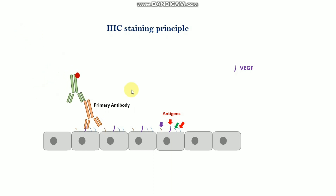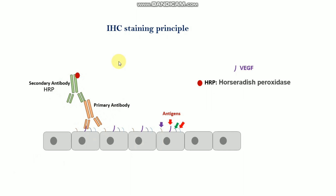The secondary antibody needs to be selected based on the primary antibody. If the primary antibody is mouse, you use anti-mouse secondary antibody; if it is rabbit, you use anti-rabbit. The secondary antibody must be HRP-conjugated for IC staining. HRP is a peroxidase enzyme conjugated to the secondary antibody. Finally, you need to add the DAB reagent — DAB is the substrate of this enzyme.